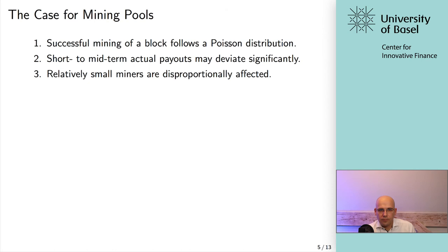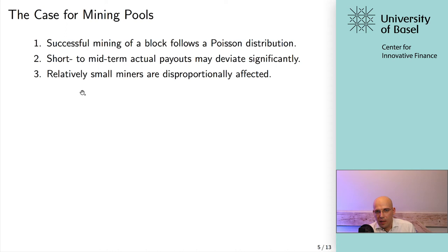The successful mining of a block follows a Poisson distribution — it's a random process, and whether you've succeeded or not with your current try does not affect your future tries. Since it's a probabilistic process, short to mid-term payouts may deviate significantly and have high variance. Relatively small miners are disproportionately affected — with a low stake in the network you could find a block immediately, or you may have to wait a really, really long time. This makes it hard to plan or create a business based on that.